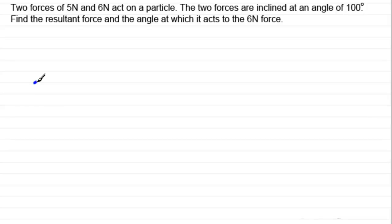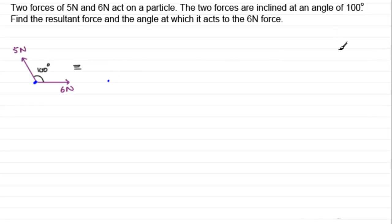We've got our particle here, and we've got our forces: 6 newtons acting out to the right, and 5 newtons. They're inclined at an angle of 100 degrees to one another. Using the triangular forces method, we take our particle and think of this as 6 newtons acting out to the right, followed by 5 newtons coming back like so. Our resultant, which acts somewhere in between these two forces, goes from the start to the endpoint — that would be R newtons, the resultant.